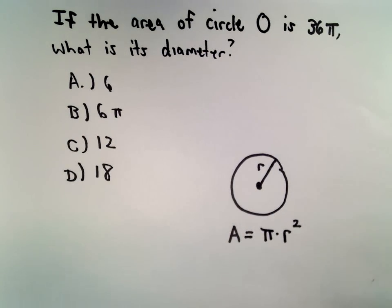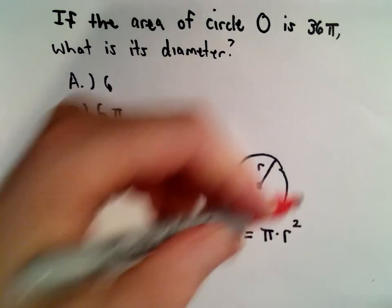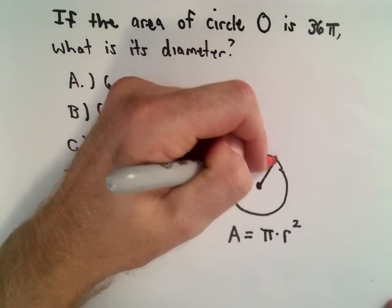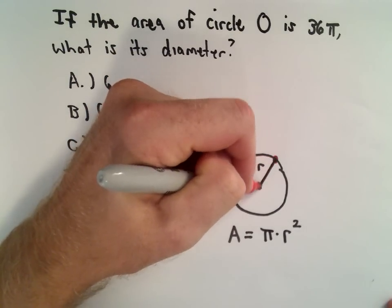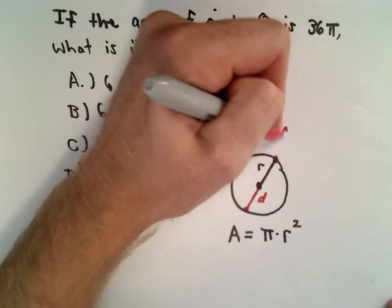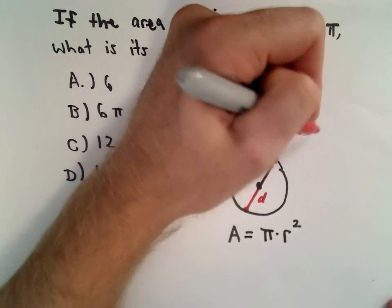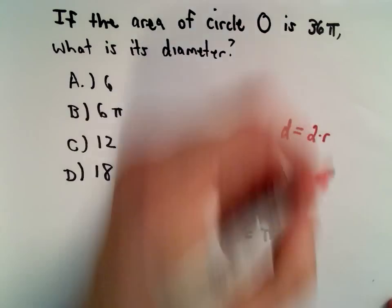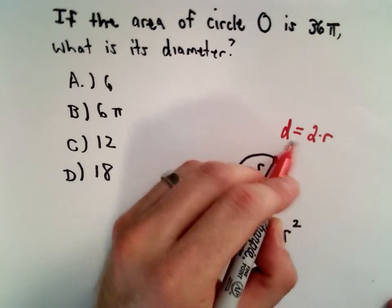Also recall that the diameter is the distance from one edge of the circle all the way to the other edge. So the diameter is going to be double the radius—it's going to be twice the radius. We take the radius and multiply by 2 to get the diameter.